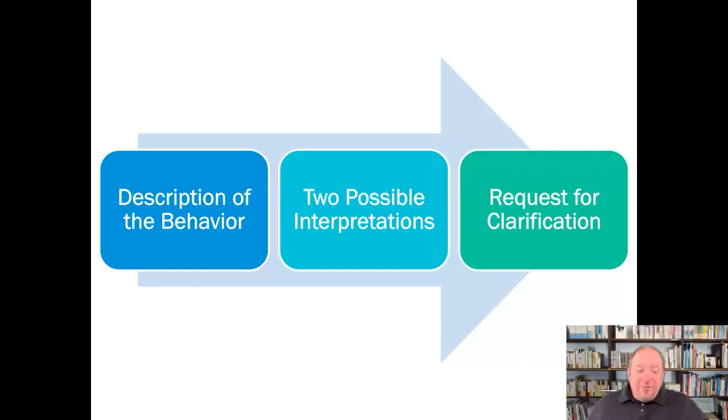Again, the three steps: description of the behavior, two possible interpretations of that behavior, and then a request for clarification. A very simple process for perception check, but I'm telling you it can be of assistance to you on a daily basis to make sure that you have a clear picture of what's happening in a particular situation, especially when there are potentially more than one interpretation.